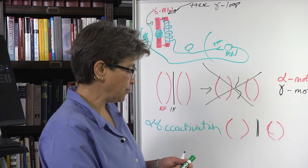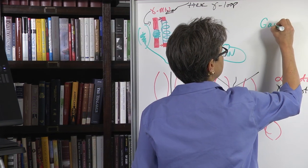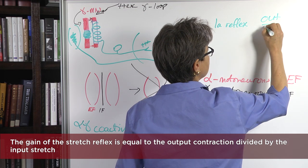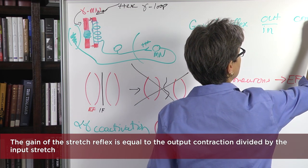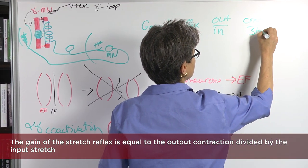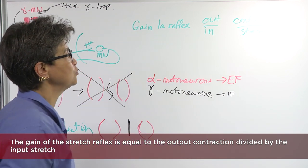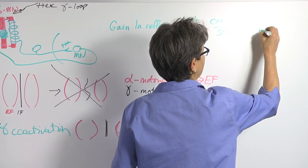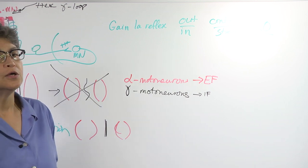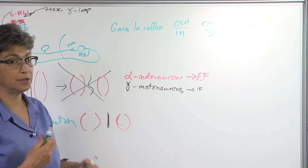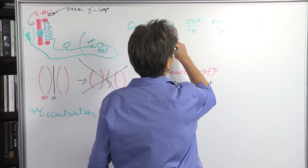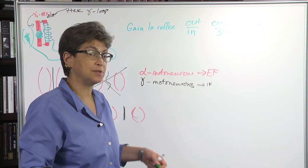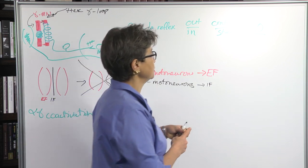So if we think about the gain of the 1A reflex, we can think about the output over the input. So this is the contraction over the stretch. Now, if this were a perfect world, if the 1A reflex were absolutely a hundred percent accurate, it would be 1.0. Every stretch would be opposed by a perfect contraction that undid that stretch. The gain of the 1A reflex is nowhere near 1.0 under normal circumstances, but under specific circumstances, it can be closer to that. Okay.